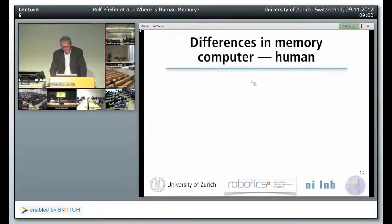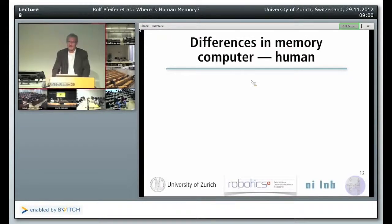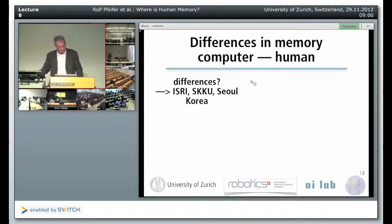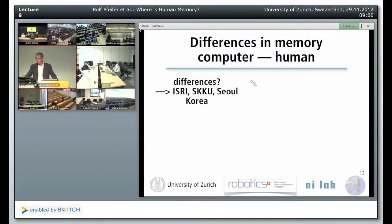I would like to start with discussing human memory from the perspective of our design principles. If we look at human memory, there are substantial differences to computer memory. Maybe we can briefly talk about some of them. Maybe we can have some comment from Korea, from Seoul, from SKKU, on some of the differences between human memory and computer memory.